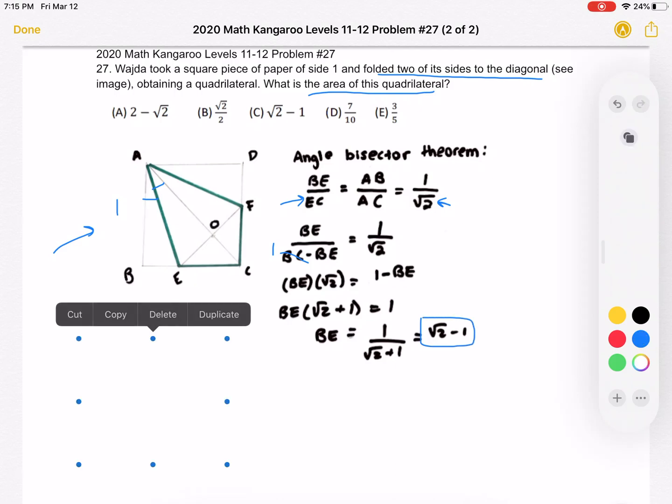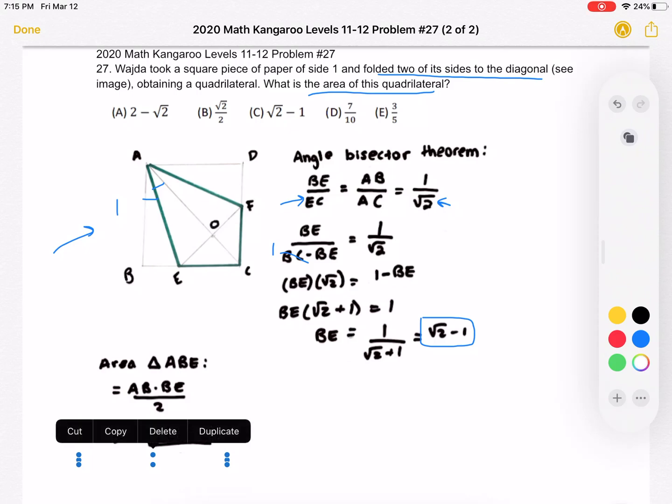And this is really nice because now we can find the area of triangle ABE. That's what we're looking for because we want to remove two times that from the total area of the square in order to find the area of the quadrilateral. So area of ABE is base times height over 2, which is AB times BE over 2. We know AB equals 1 because it's the side length of the square, and we just found what BE is. So we have 1 times square root of 2 minus 1 over 2 as area of ABE.